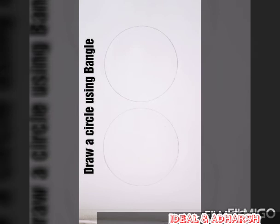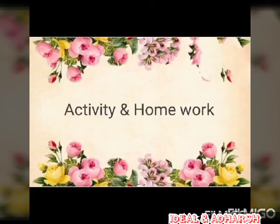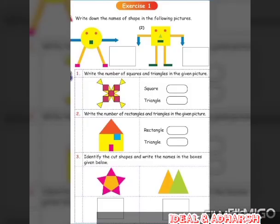In this class we have two points. The first one is an activity: draw a circle using any object, for example a coin, bangle, CD, or plate. The second one is question answers. Question A: write down the names of shapes in the following pictures — that means, what shapes do you see? Write the shapes in the box.